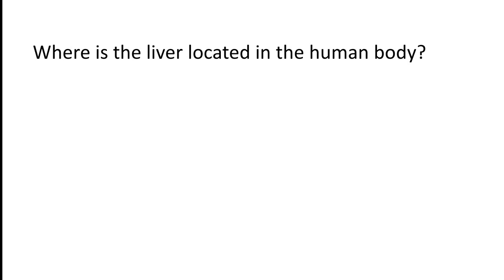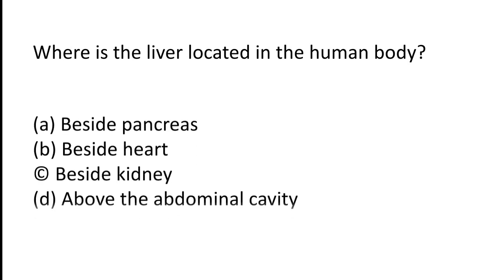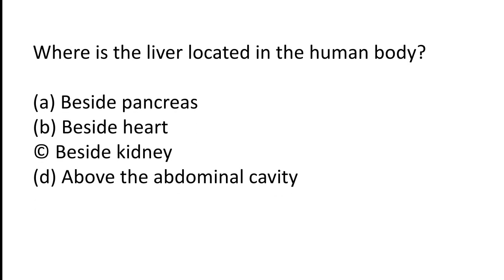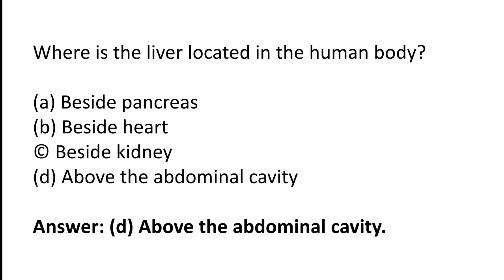Where is the liver located in the human body? A) Beside pancreas, B) beside heart, C) beside kidney, D) above the abdominal cavity. The correct answer is option D — above the abdominal cavity.